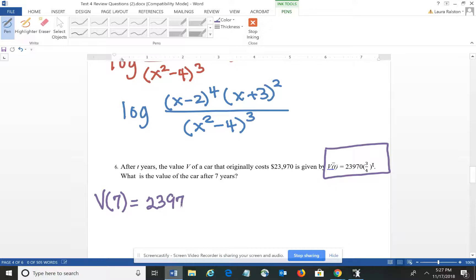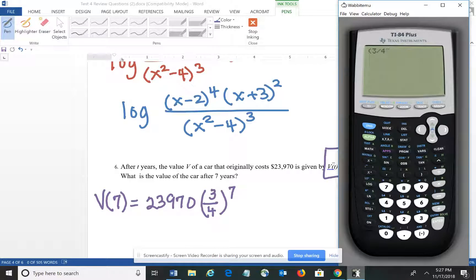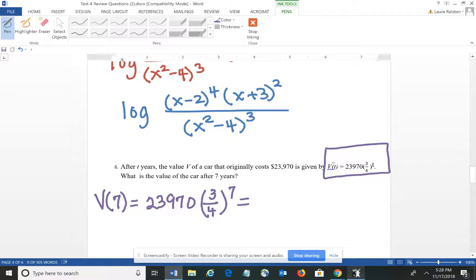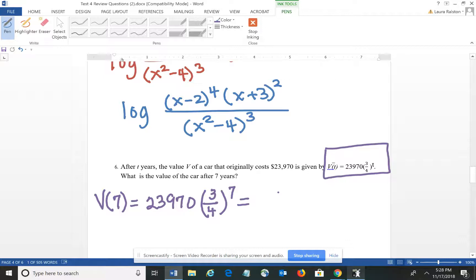So we're going to figure the value of the car after 7 years, which would be $23,970 times three-fourths raised to the 7th power. And again, at that point, I'm probably definitely getting my calculator out. We would have 3 divided by 4 raised to the 7th power times $23,970 all on my calculator. And so I end up with a value of $3,199.61 if you round it. So the value of the car would be $3,199.61 after 7 years. Guys, it's a straight plug and chug problem – use your calculator, follow order of operations.